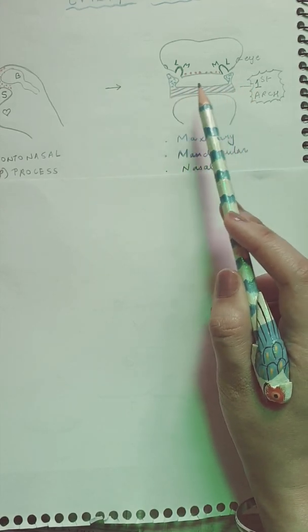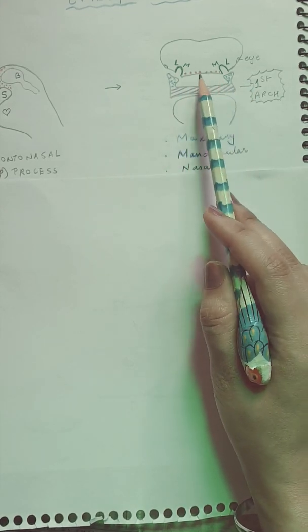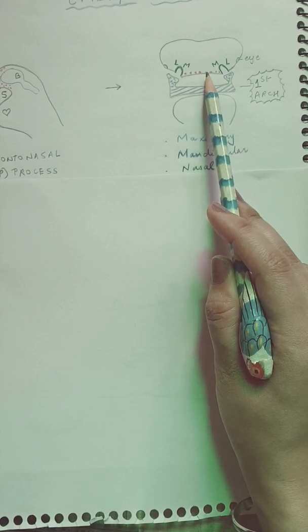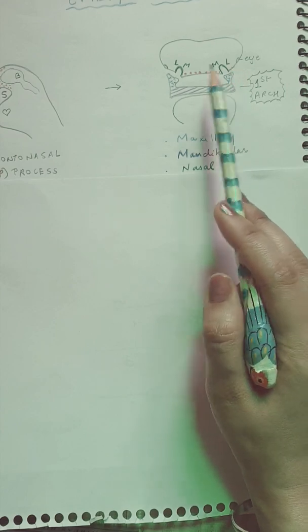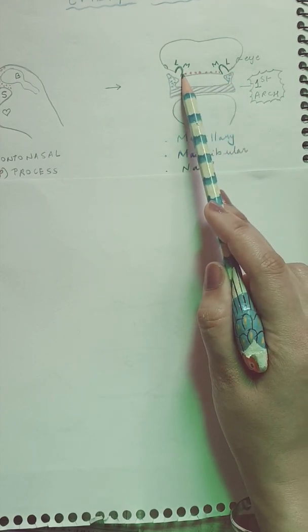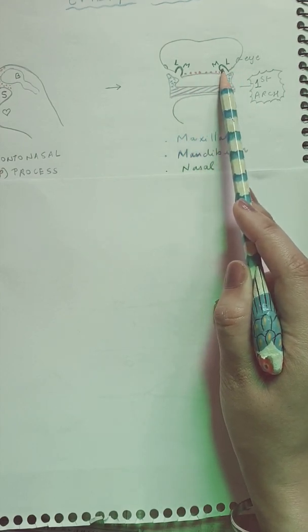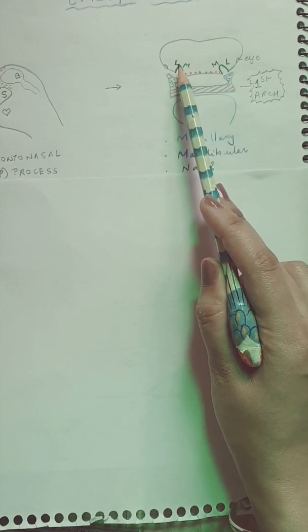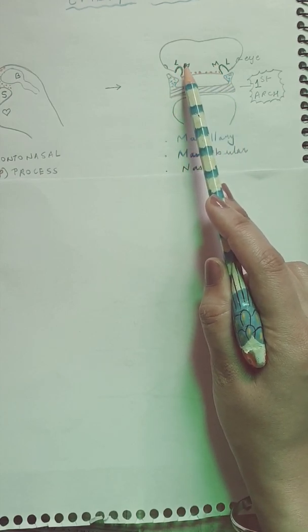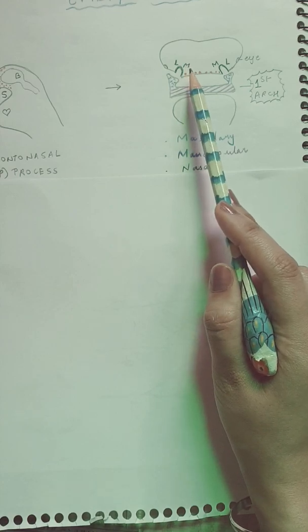They are paired processes on either side. So the frontonasal process was a single midline one and these two are the paired processes. Also there will be the formation of these nasal placodes and nasal pits which will give rise to the medial and the lateral nasal processes. Again, they will be important when we talk about the formation of a cleft lip.